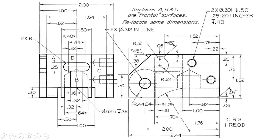The front and right side views of the cocking block are given along with necessary dimensions and some general notes. There are surfaces A, B, C as frontal surfaces. In the front view, you have several rectangular surfaces, another one below, and a straight slot. In the right-hand side view, you have an overall shape with a profile, three solid circles, and other details with hidden edges.